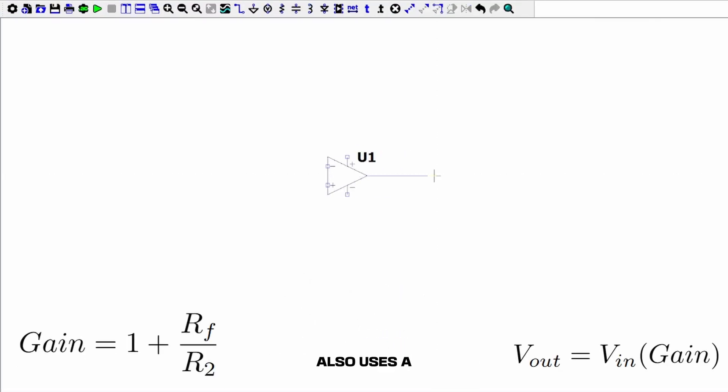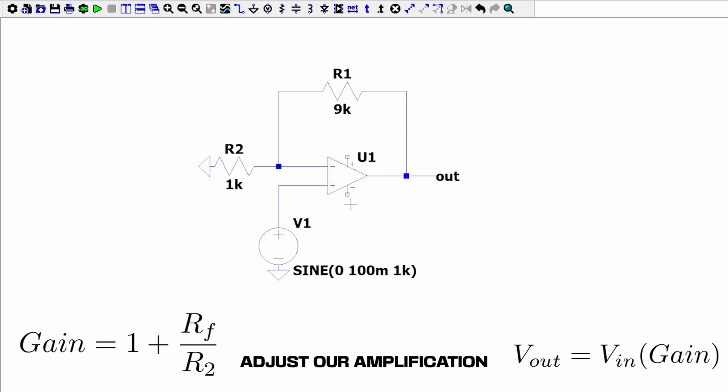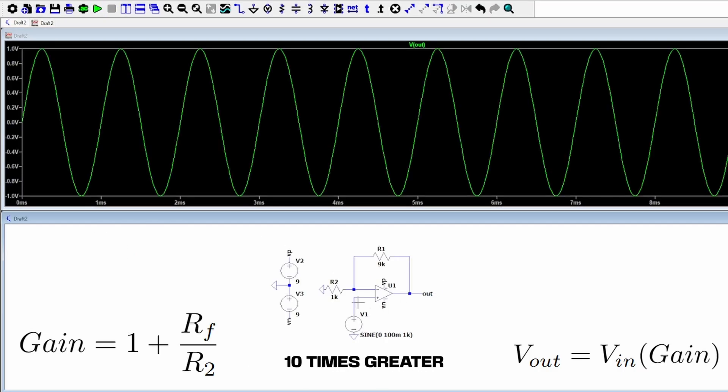The next configuration also uses a negative feedback loop, but this time we add a few resistors to create a non-inverting amplifier. We can use a gain equation to adjust our amplification, and as long as our amplified wave doesn't reach the positive or negative rail, we will have a clean amplified signal. You can see that our signal in green has an amplitude 10 times greater than our original signal in blue.